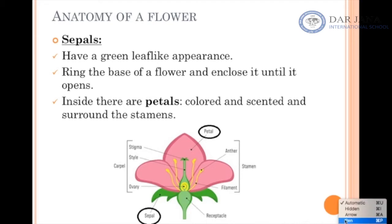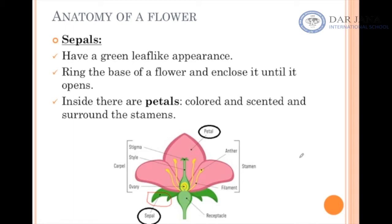Let's look at the parts of the flower — the anatomy of a flower. First, there are the sepals. The sepals are the green structures here; they look like leaves, so they are leaf-like green structures. They ring the base, meaning they surround the base like a ring, and they enclose the flower when it is still small or still growing at the beginning.